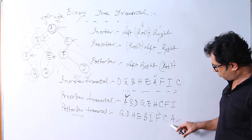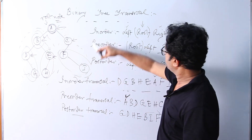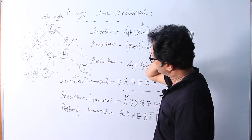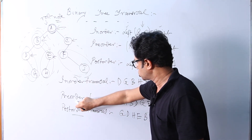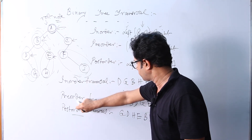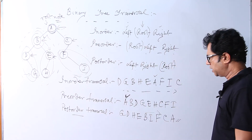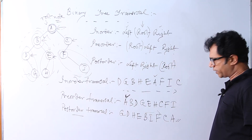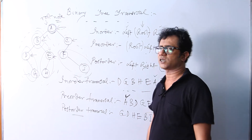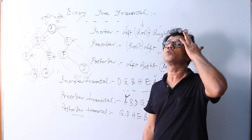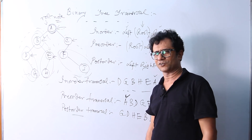We have covered all three traversal mechanisms on a binary tree: in-order, pre-order, and post-order traversal. If you have any doubts or queries relating to this topic, you can post them in the comment section below so that I can address them. Thanks for watching this video.